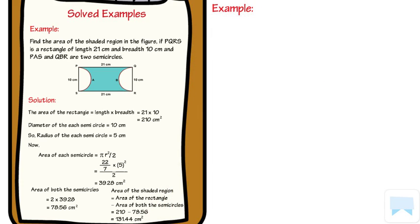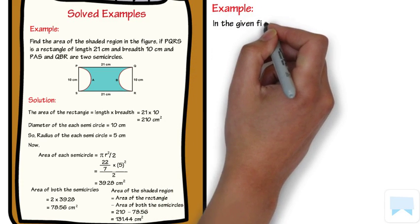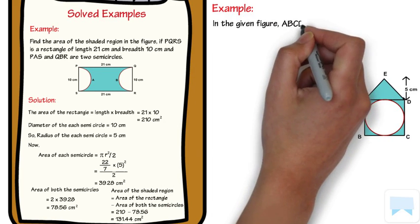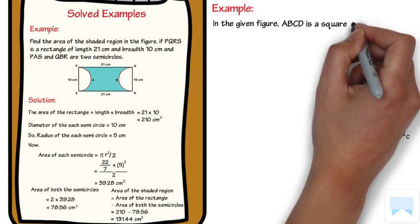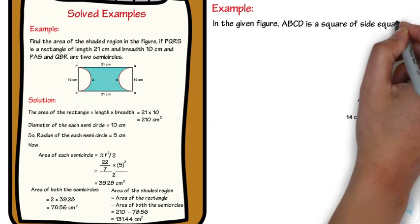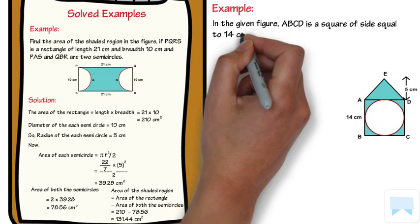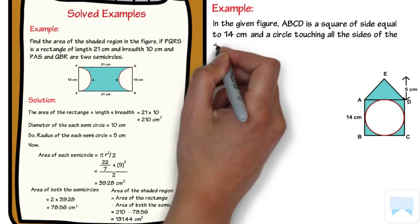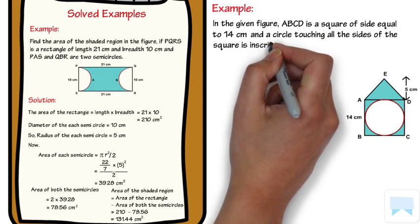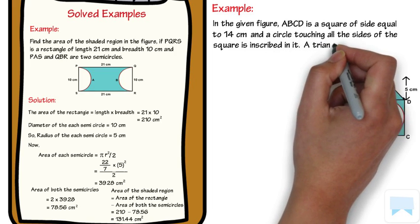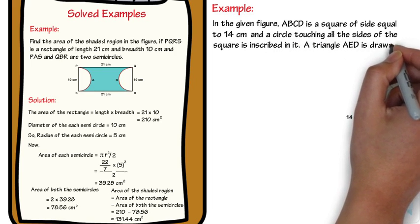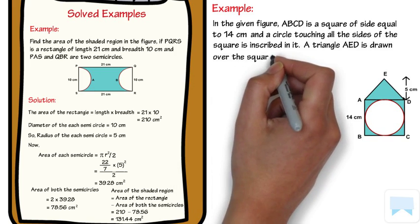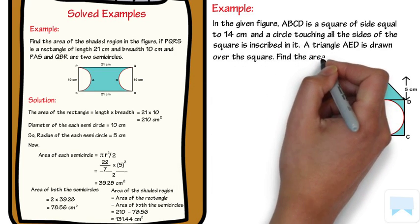Now let's take another example. In the given figure, ABCD is a square of side equal to 14 cm, and a circle touching all the sides of the square is inscribed in it. A triangle AED is drawn over the square. Find the area of the shaded region.